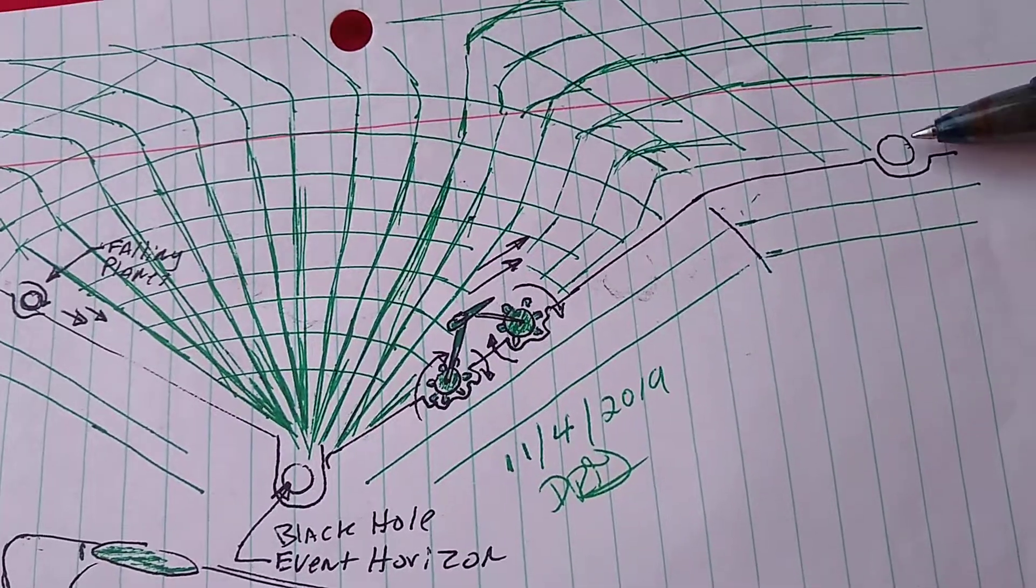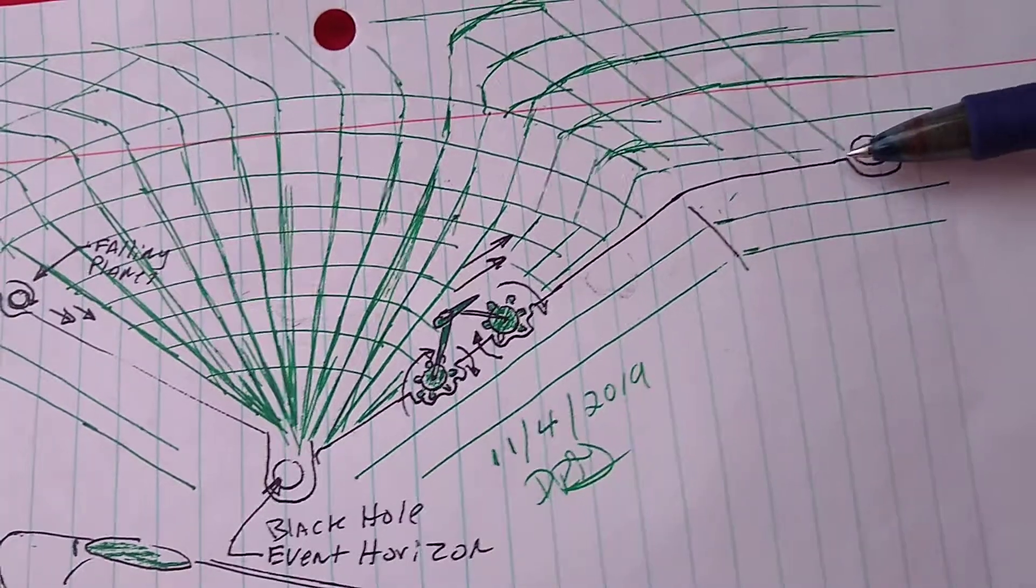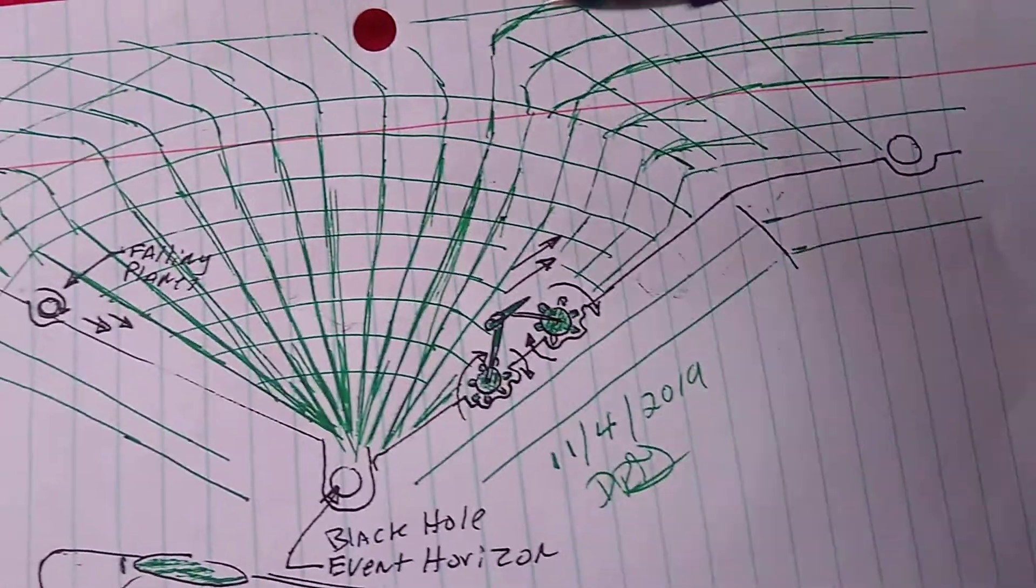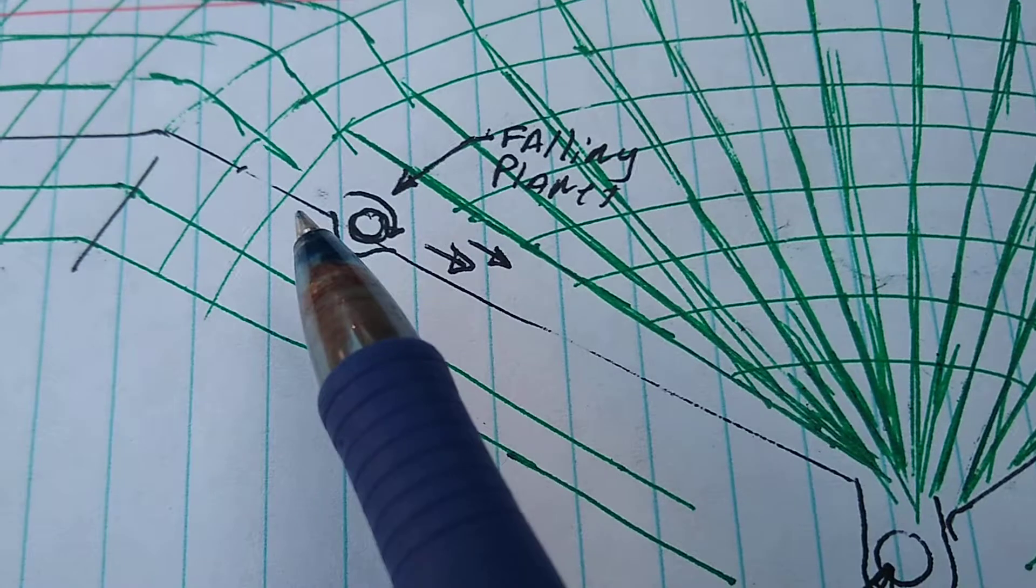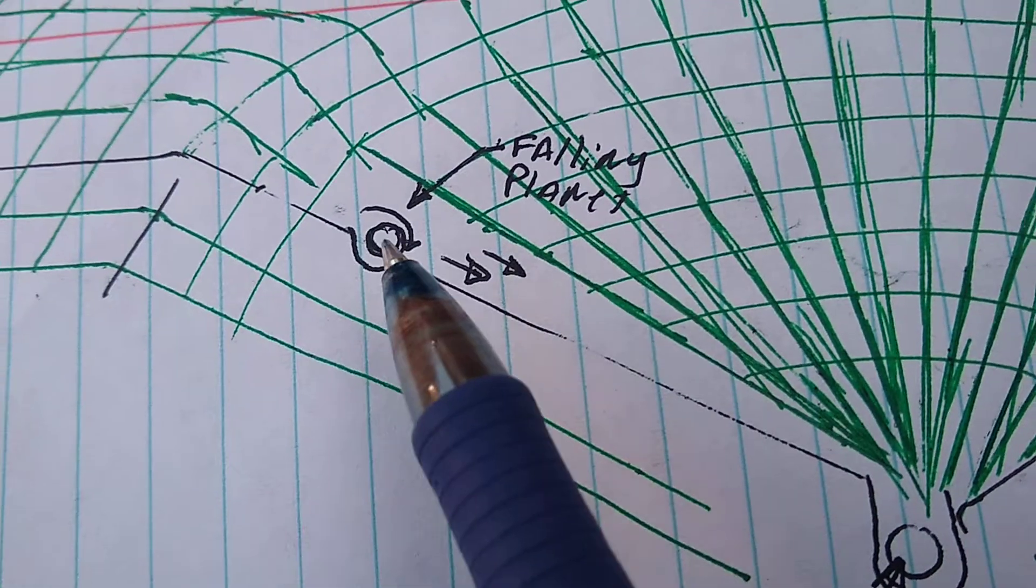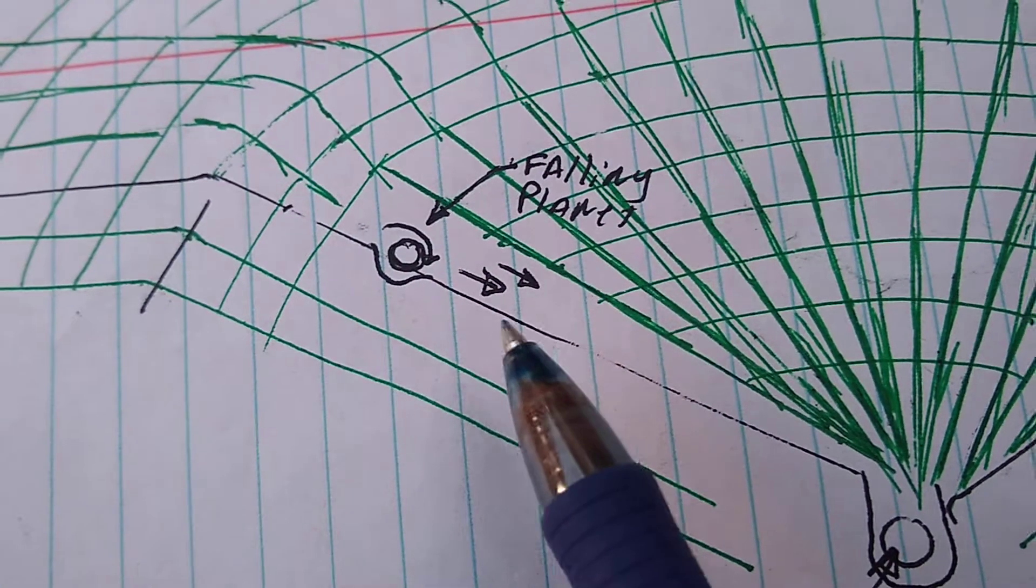Here we have a planet that the weight of it actually curves this time and space right here. Then we have here another planet that also is being curved and the gravity itself is just rolling down to the black hole.